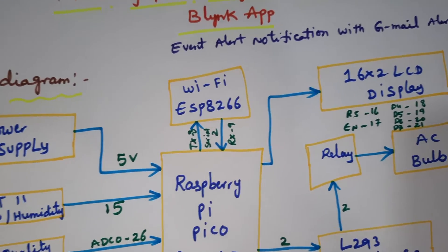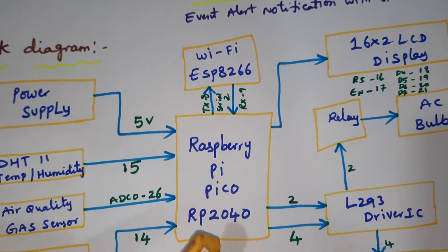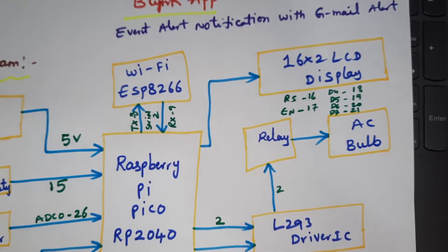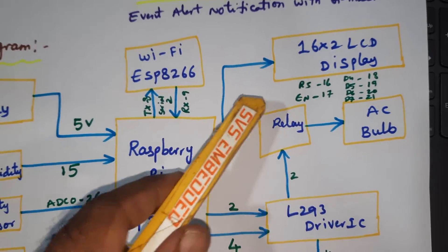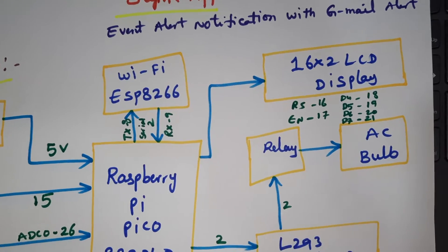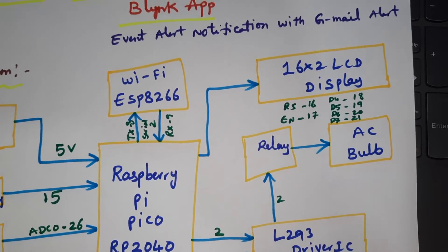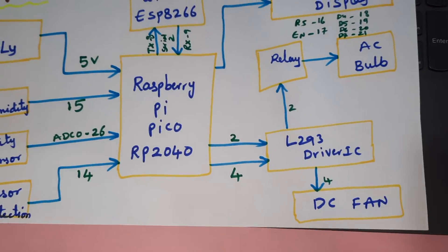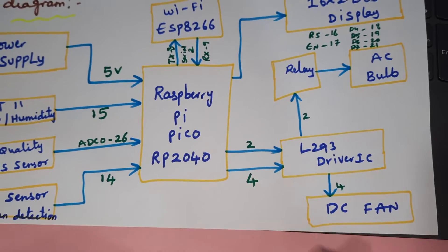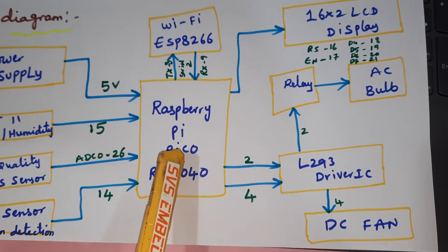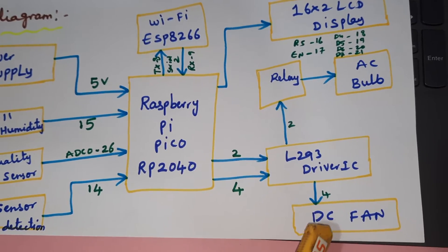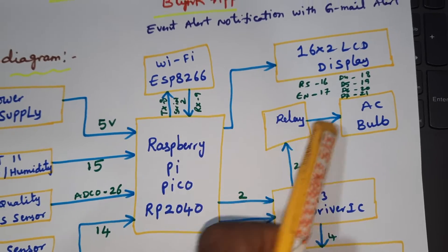The ESP8266 Wi-Fi module connects to a Wi-Fi router or mobile hotspot for internet. A 16x2 LCD character display shows the ongoing process. The LCD is connected via pins RS, Enable, D4, D5, D6, D7 corresponding to GPIO pins 16, 17, 18, 19, 20, 21. We are using an L293D motor driver IC to control the appliances, since the board operates at 3.3V, requiring the external driver to control the DC fan, 5V relay coil, and AC bulb.